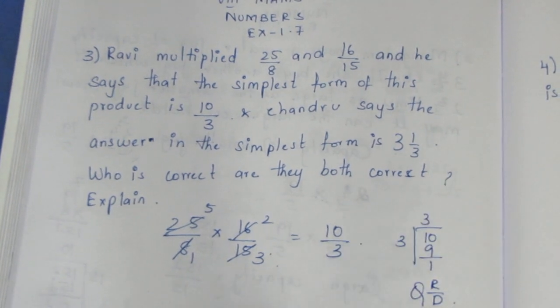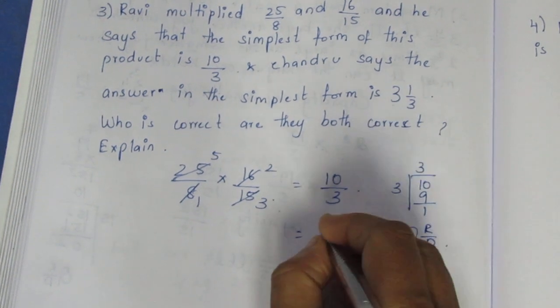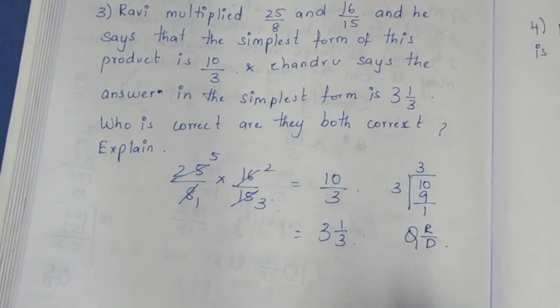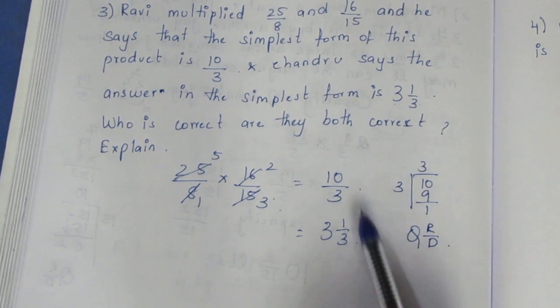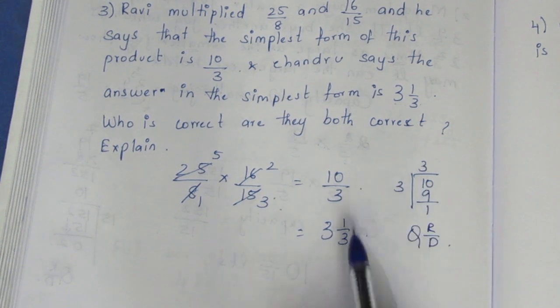This is 3 and 1 by 3. If you see, the answer is 3 and 1 by 3. Both 10 by 3 and 3 and 1 by 3 are correct.